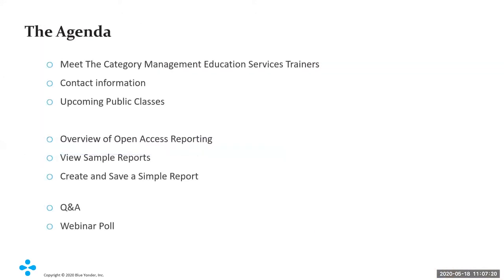Our agenda today matches the agenda for the other webinars. We'll quickly introduce the category management trainers, give you our contact information so you can reach us with questions on this subject or any other subjects in the category management suite, and then a list of our upcoming public classes for additional training support. Then we'll move into the main reason you're here: an overview of Open Access reporting, a look at some sample reports that already exist, and then we'll create and save a very simple report. After that, we'll have a quick Q&A and a webinar poll.